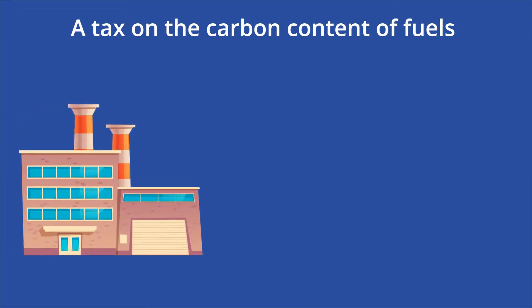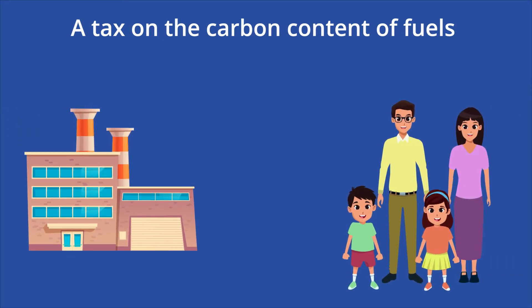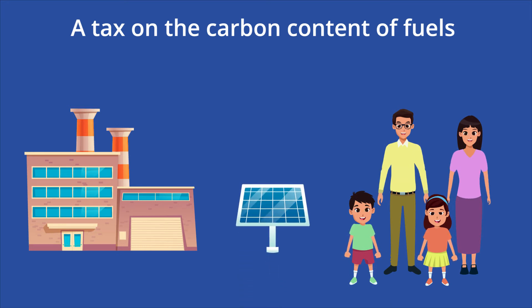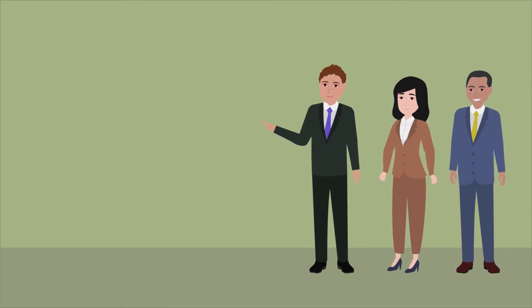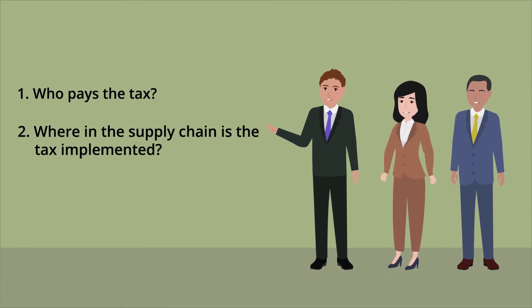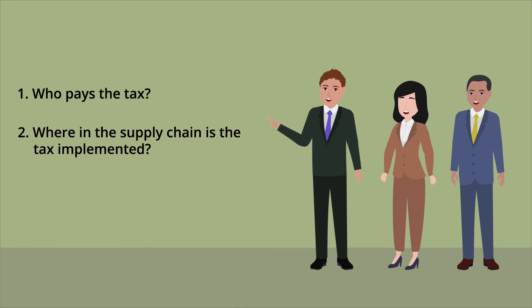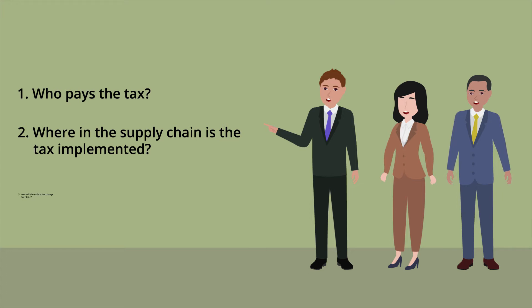The carbon tax is a proposed solution to hold businesses and consumers accountable for the emissions they contribute to the environment and encourage switching to renewable energy sources. The process of implementing a carbon tax begins by deciding who will pay. If placed at the beginning of the energy supply chain, the tax will apply to suppliers of coal and other fossil fuel energy sources. If the government levies the tax further down the supply chain, it will affect individual households using fossil fuel energy sources.